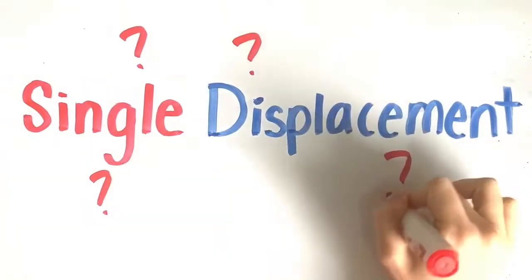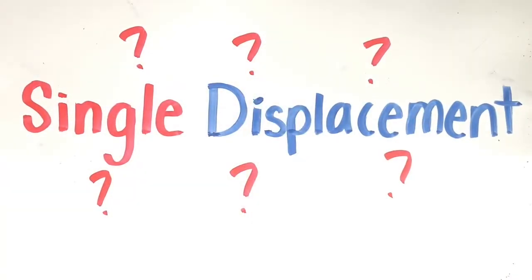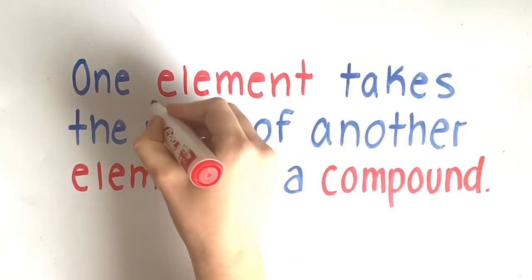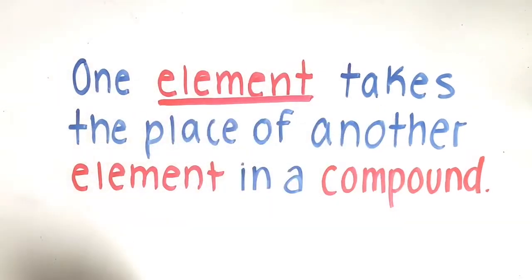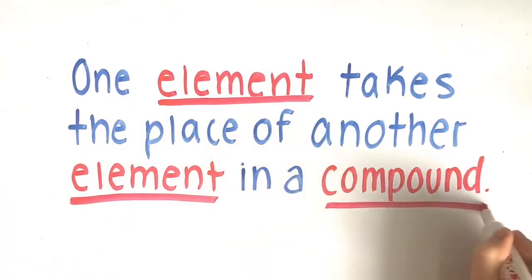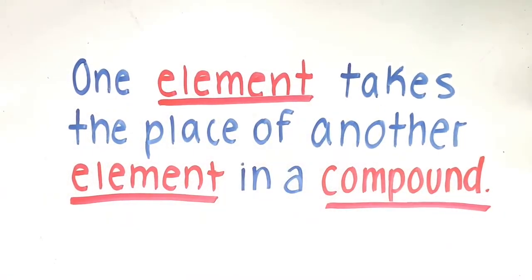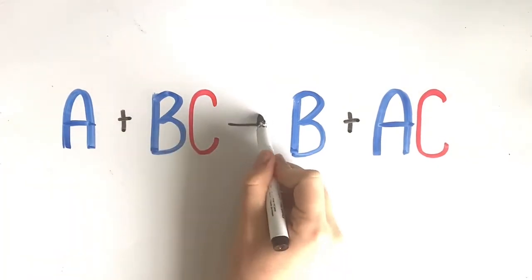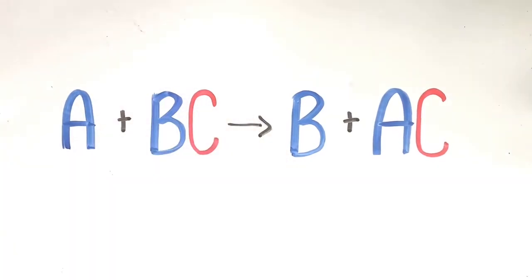During a single displacement reaction, one element takes the place of another element in a compound. This reaction is represented by the formula A plus BC yields AC plus B.